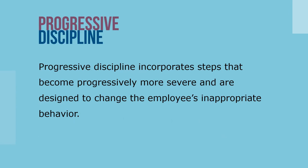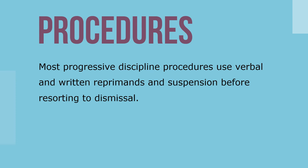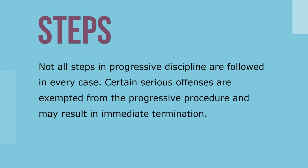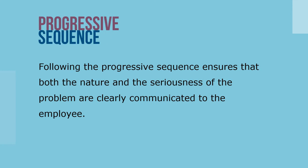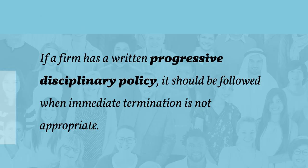Progressive discipline incorporates steps that become progressively more severe and are designed to change the employee's inappropriate behavior. Most progressive discipline procedures use verbal and written reprimands and suspension before resorting to termination. Not all steps are followed in every case — certain serious offenses are exempted and may result in immediate termination. Although it appears similar to positive discipline, progressive discipline is more administrative and process-oriented. Following the progressive sequence ensures that both the nature and seriousness of the problem are clearly communicated to the employee. If an organization has a written progressive disciplinary policy, it should be followed when immediate termination is not appropriate.